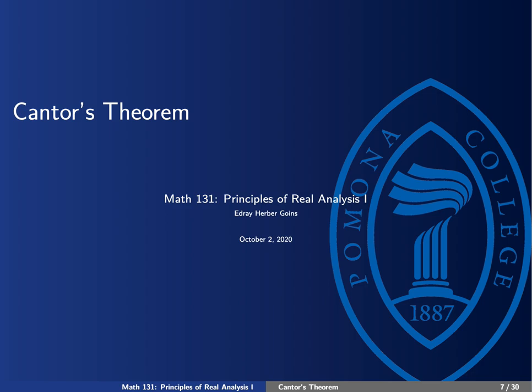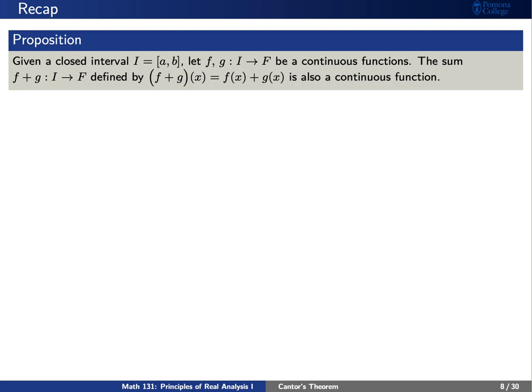Today we're going to talk about Cantor's Theorem. First, let's give a quick recap of where we were in our last lesson. In everything we do today, let's say that f and g are continuous functions and I is a closed interval from a to b.